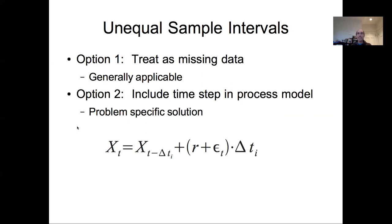If you just have a constant process error parameter sigma, you can't apply that sigma the same for every time point if the time intervals between them are not the same. You have to account for the fact that over longer time intervals, the observation error is going to accumulate and be larger.